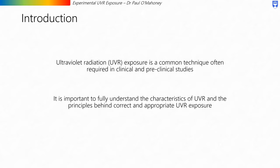A brief introduction first. Ultraviolet radiation, or UVR, is a common technique often required in clinical and preclinical studies. This can range from calibrating light source outputs, irradiating cells, through to human studies perhaps assessing the phototoxic potential of a new drug. It is important to fully understand the characteristics of UVR and the principles behind correct and appropriate UVR exposure — not just to ensure that the science is done properly and the results are reliable, but also so that other people can understand exactly what was done and replicate or adapt protocols as necessary.